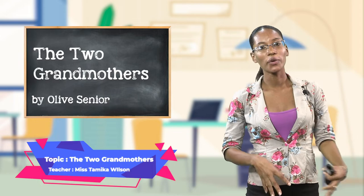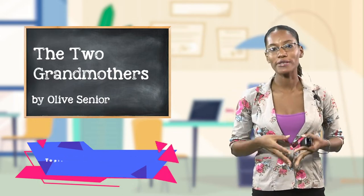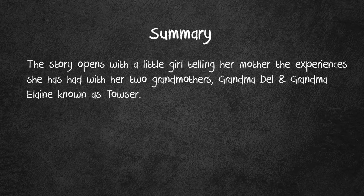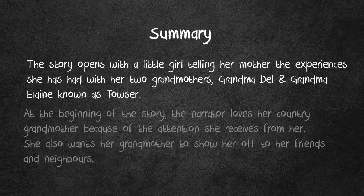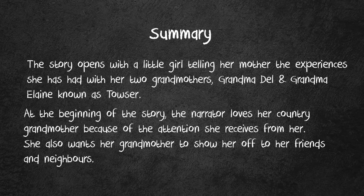First of all, we're going to begin by looking at the summary of the story, The Two Grandmothers by Olive Senior. The story opens with a little girl telling her mother about the experiences she had had with her two grandmothers, Grandma Del and Grandma Elaine, known as Tausser. At the beginning of the story, the narrator loves her country grandmother because of the attention she receives from her. She also wants her grandmother to show her off to her friends and neighbors.